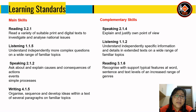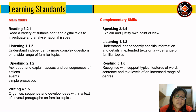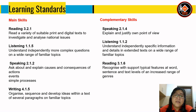The learning standards are: Reading 3.2.1 - read a variety of suitable print and digital text to investigate and analyse national issues; Listening 1.1.5 - understand independently more complex questions on a wide range of familiar topics; Speaking 2.1.2 - ask about and explain causes and consequences of actions, events and simple processes; Writing 4.1.5 - organize, sequence and develop ideas within a text of several paragraphs on familiar topics. Complementary skills include Speaking 2.1.4, Listening 1.1.2, and Reading 3.1.6.